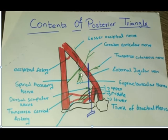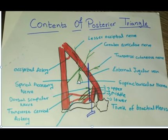Four cutaneous nerves can also be seen in the occipital triangle: the lesser occipital nerve with root value C2, the great auricular nerve with root value C2 and C3, the anterior cutaneous nerve or transverse cutaneous nerve with root value C2 and C3, and the supraclavicular nerves — medial, intermediate, and lateral — with root value C3 and C4. These four cutaneous nerves pierce the deep fascia and become superficial.